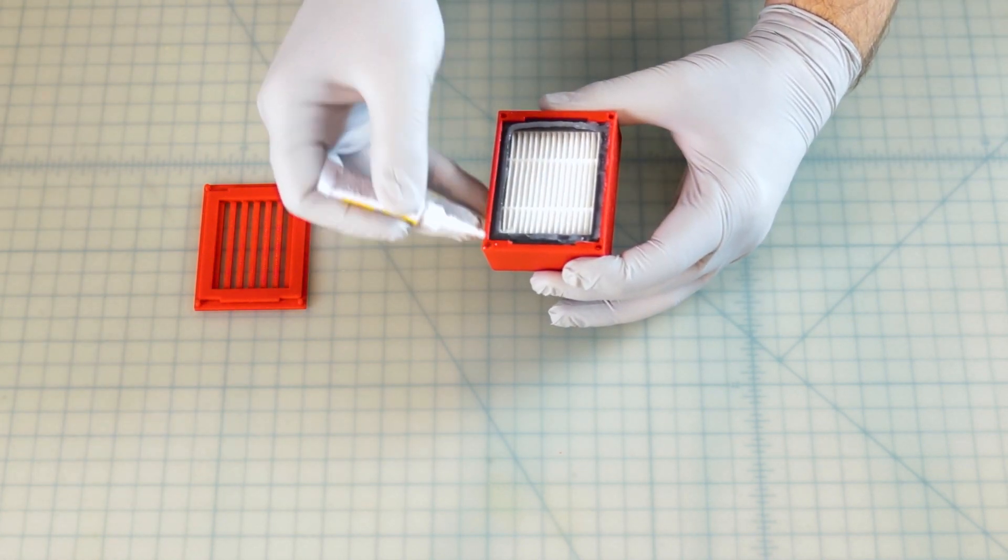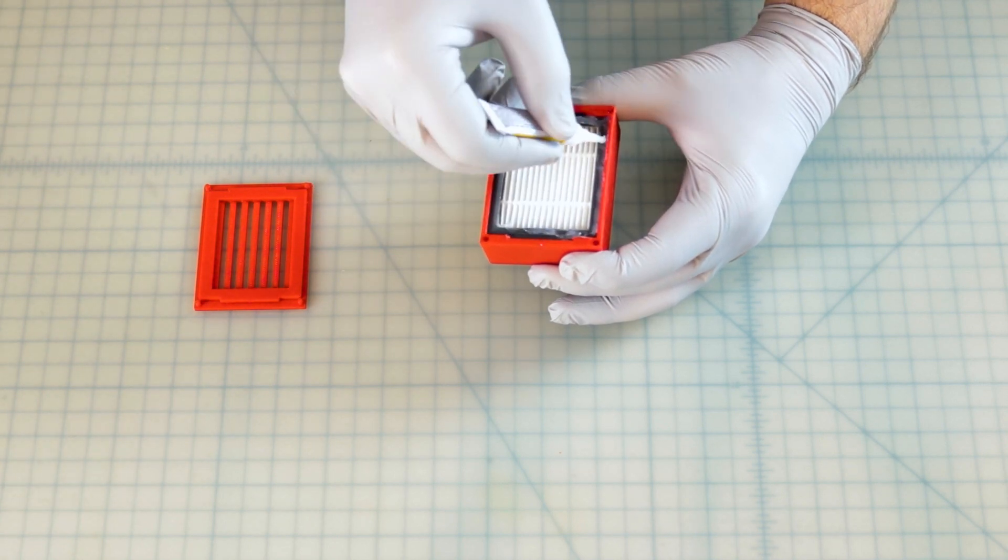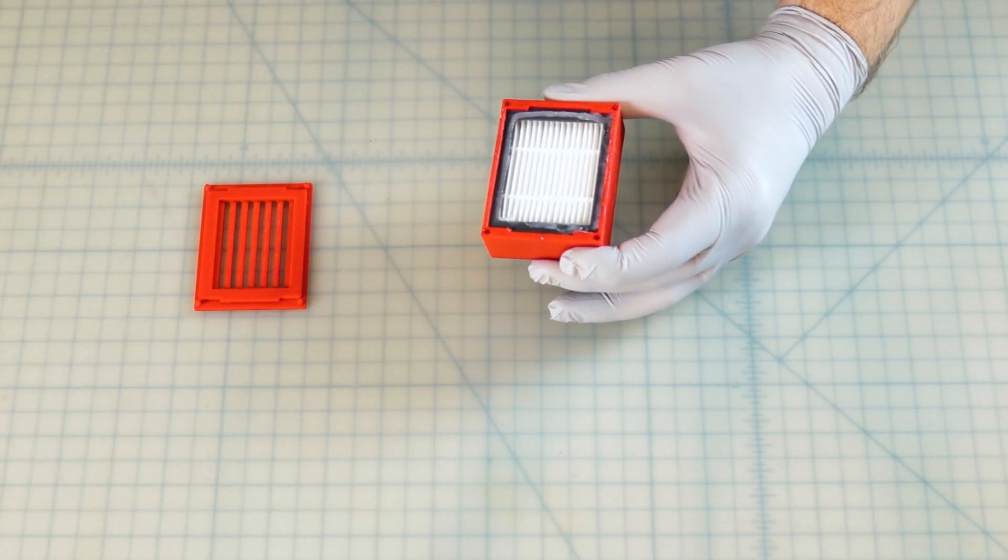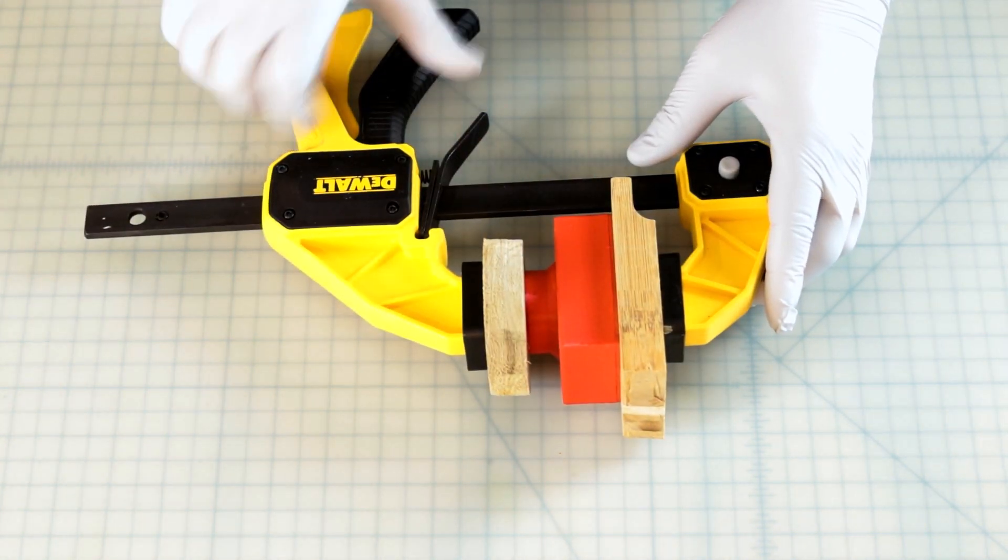Next, we'll add non-toxic fast drying adhesive to hold the cassette tightly together. Now we clamp and allow time to dry.